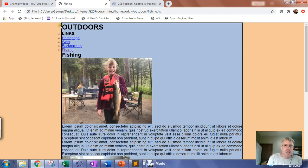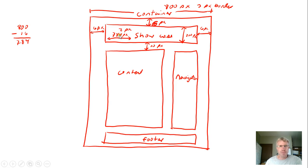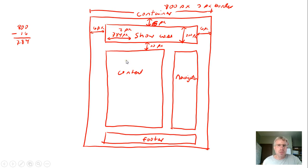For this video we're going to set up the showcase. The showcase is going to be 784 pixels wide, with a five pixel margin from the top of the page and six pixels margin on either side. We'll use margin auto to float it into the center. We want it 200 pixels high and 784 pixels wide with a two pixel border, so we'll go into the stylesheet and start setting this up.